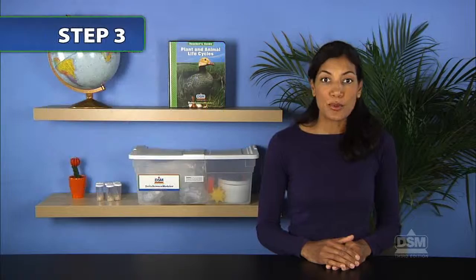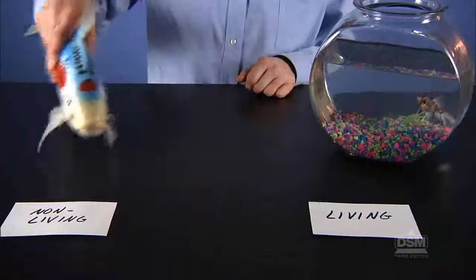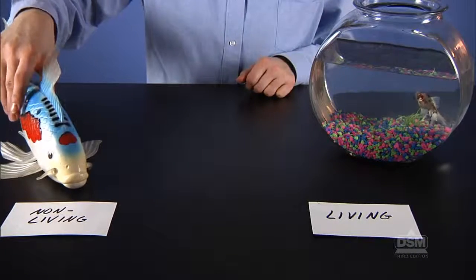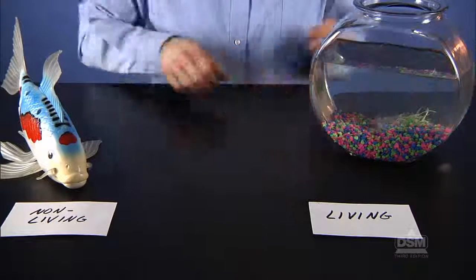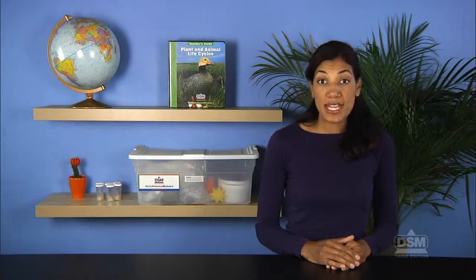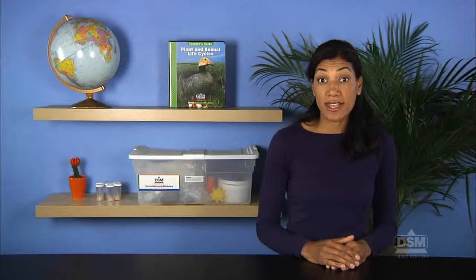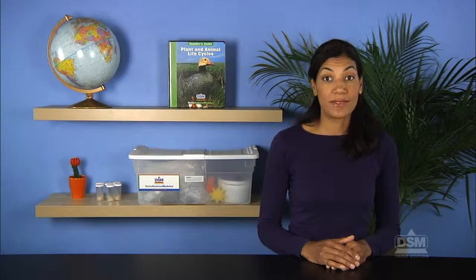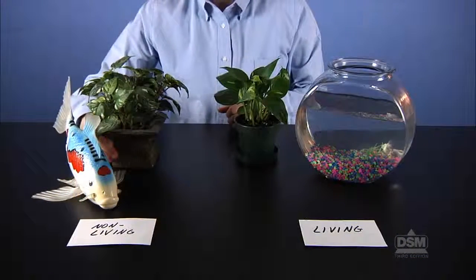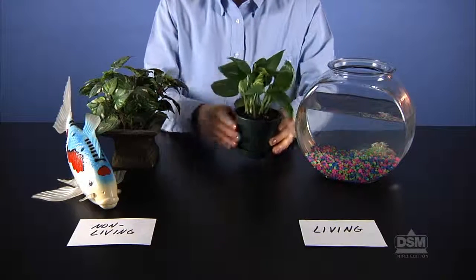Then begin a sorting process by placing the living animal and the toy animal in separate, distinct locations on the table. Instruct students to identify which plants are living and which are nonliving, and to place the real and artificial plants in the appropriate locations on the table.